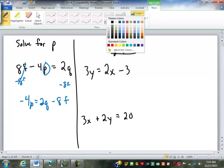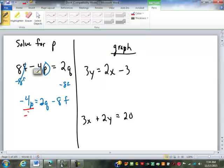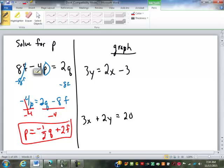Then what? Divided by negative 4. Negative 4 is gone. P equals 2Q divided by negative 4, negative 4 is a negative 2 over 4, a negative 1 over 2 Q. Negative 8F divided by negative 4 is a positive 2F. So that's what that turns out to be. Any questions on that one?